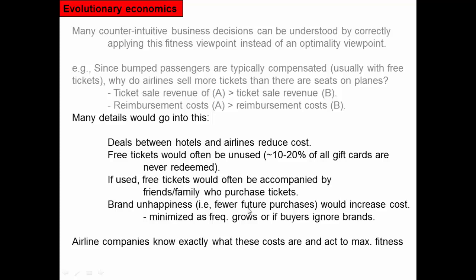That could cause brand unhappiness — if people keep getting bumped from a certain airline, they'll stop using it. But that cost is minimized if every airline does this, because then there's no advantage to picking one airline over another, or if everybody books through sites like Orbitz where nobody pays attention to brand. Airline companies use game theory, mathematics, and this process to calculate exact costs and maximize fitness. Back in the day airlines just sold tickets for however many seats they had, but it became more advantageous to sell extra seats — even bumping paying passengers — because it results in higher fitness for the airline.